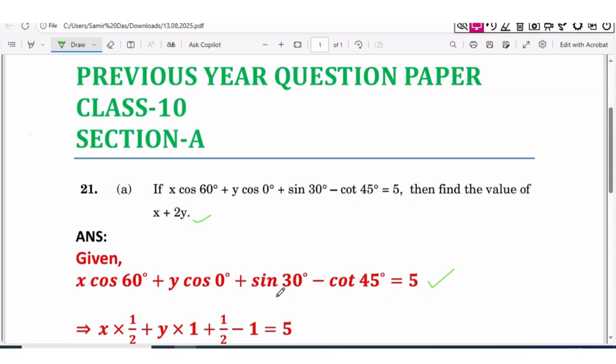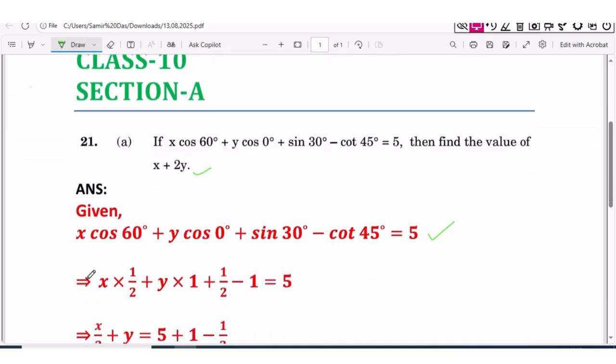Therefore, that implies x into value of cos 60° is equal to 1/2, plus cos 0° - the value of cos 0° is 1, so y into 1.